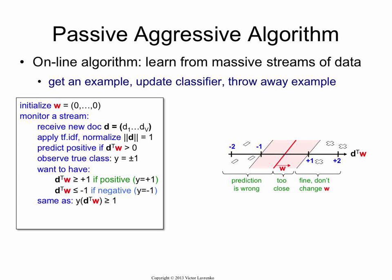If y is minus 1, you get minus d transpose w, less than or equal to minus 1 times minus 1. So when you're multiplying by a negative 1, this is going to flip. So you're going to get greater than or equal to plus 1 again. So this equation captures both of them. So that's what we want to enforce.